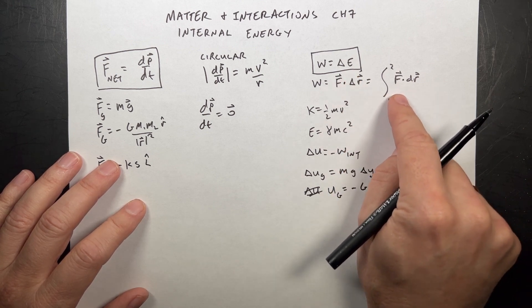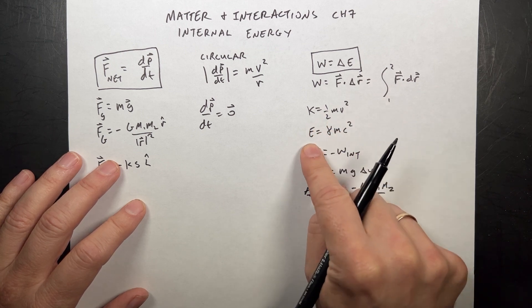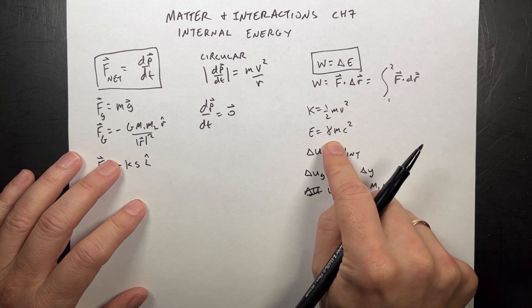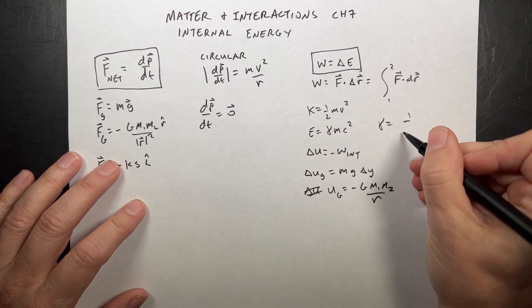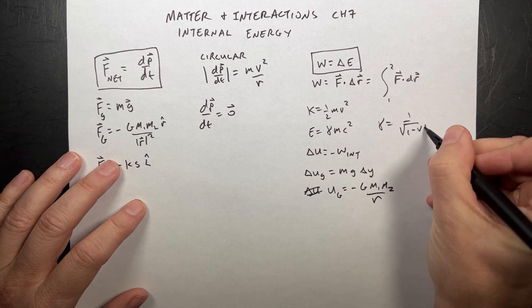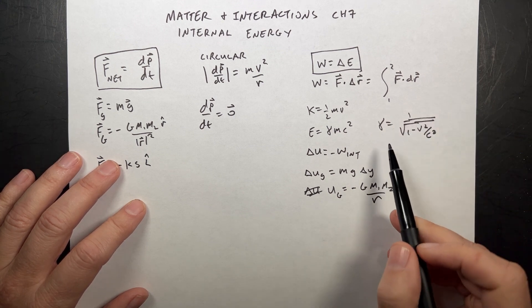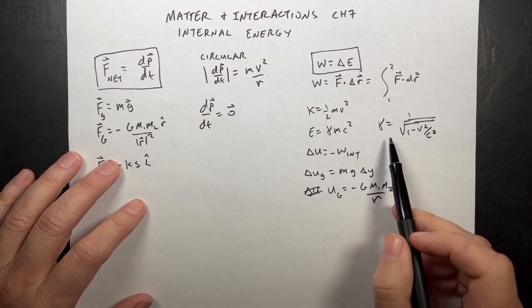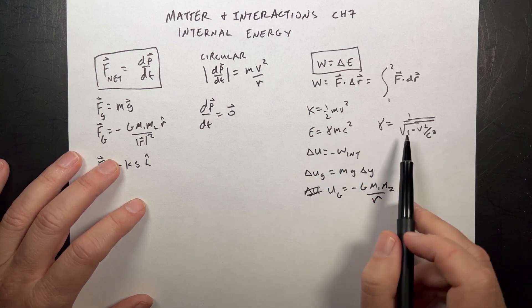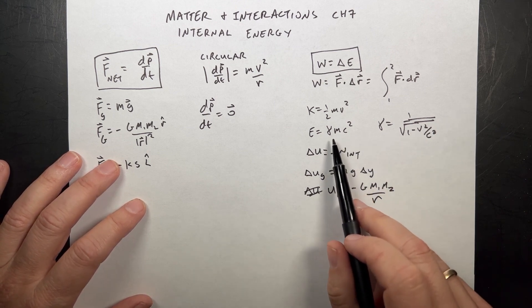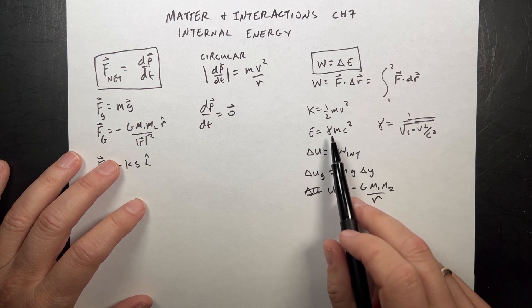In terms of energies, we have the particle energy, where gamma is one over the square root of one minus v squared over c squared. This tells us if a particle is moving really fast, its energy increases in cool ways. But even if it's at rest, it still has energy, that mc squared term. We use that for nuclear reactions.